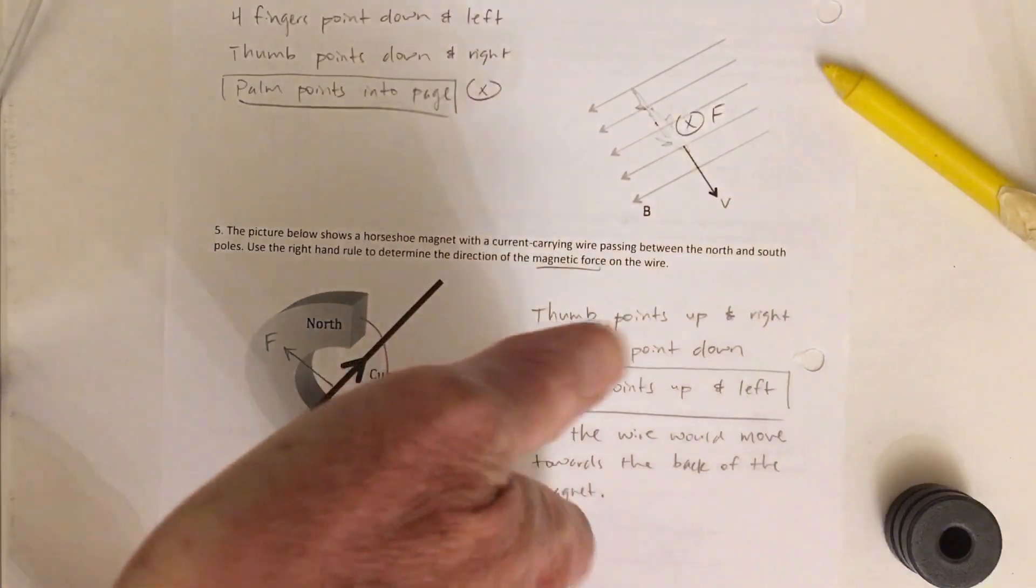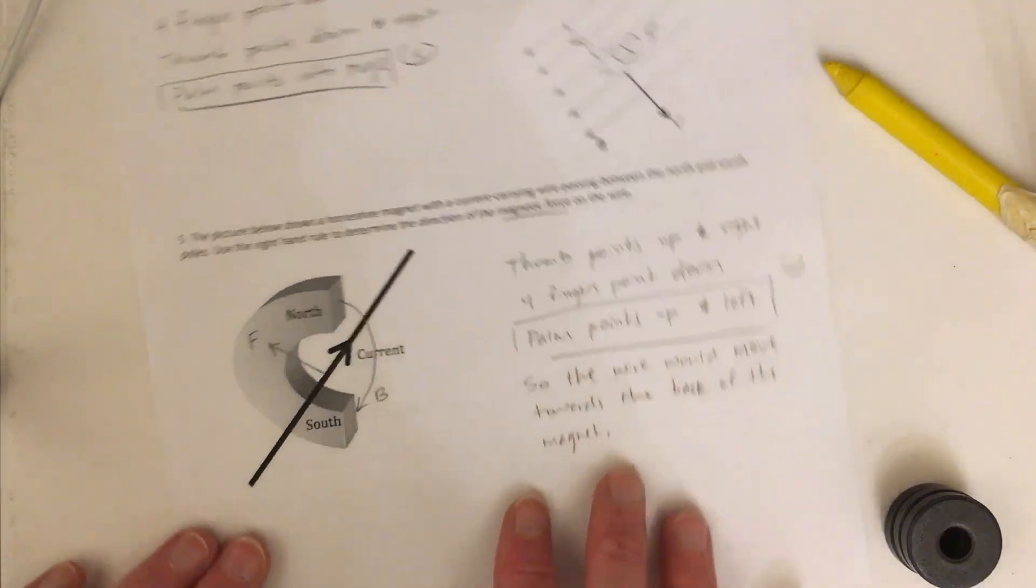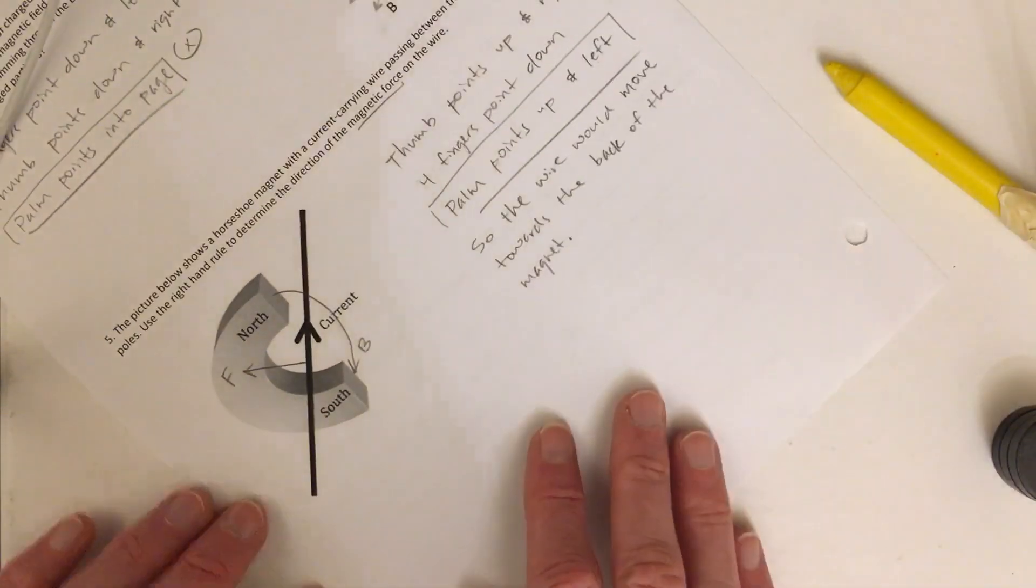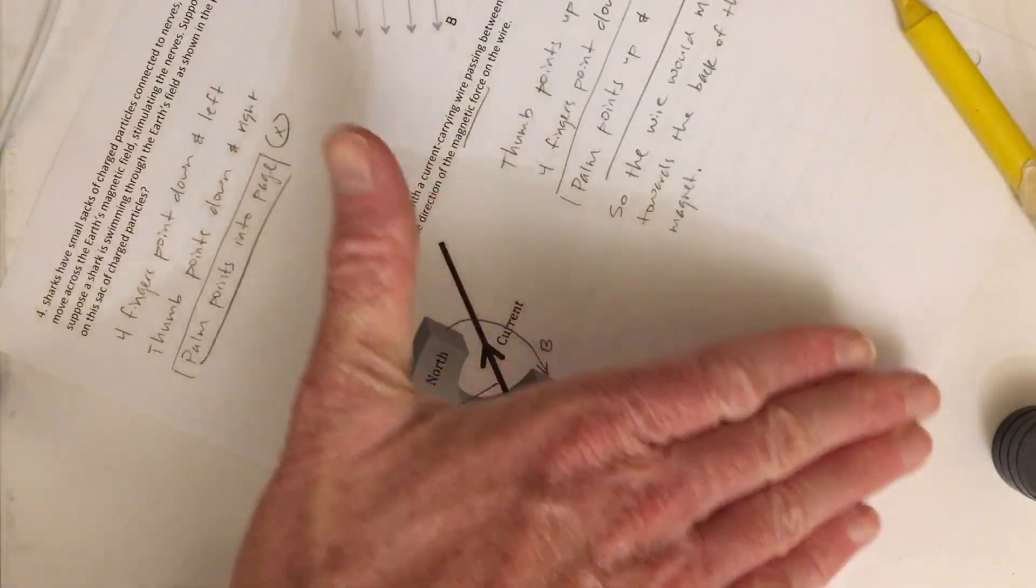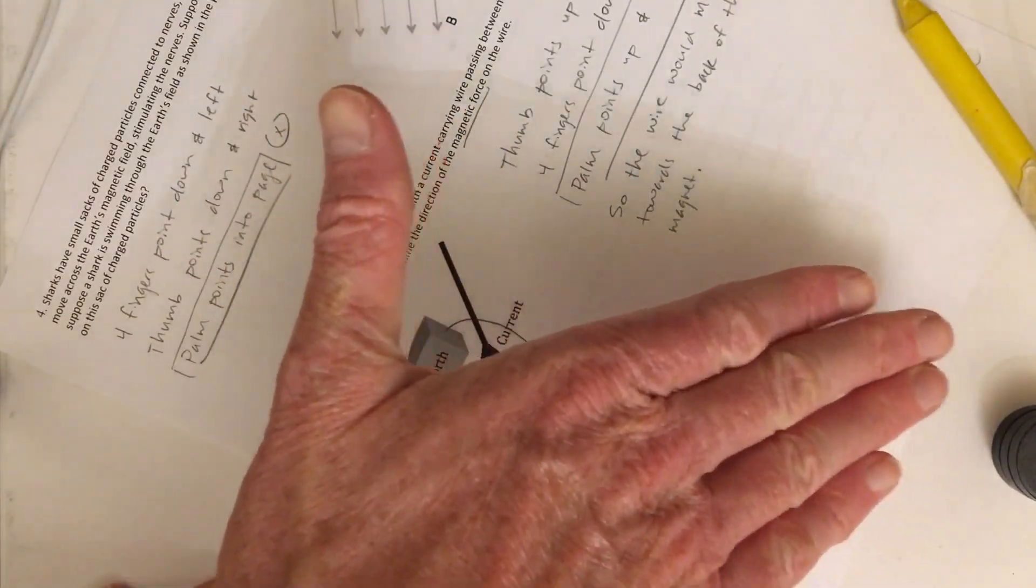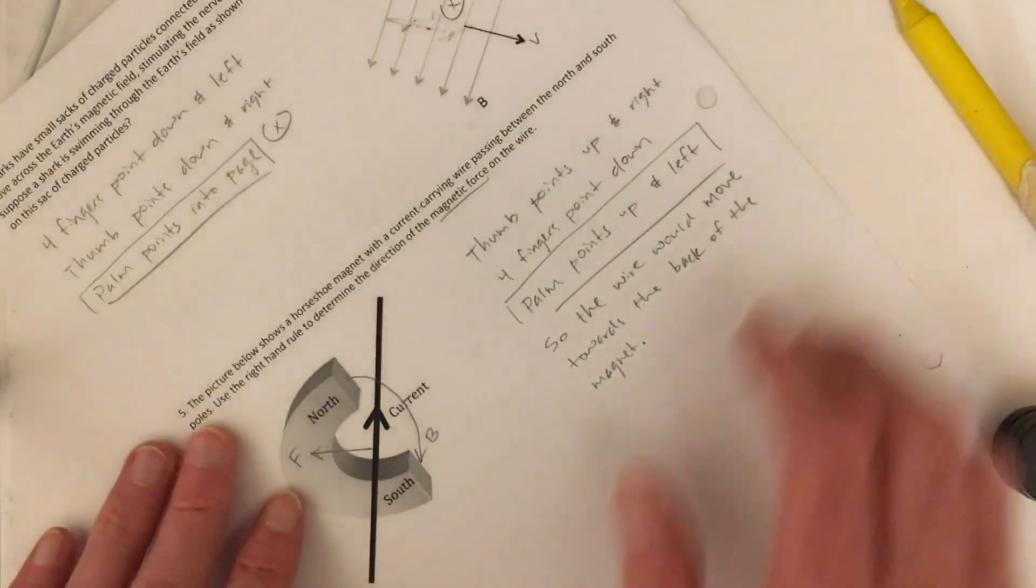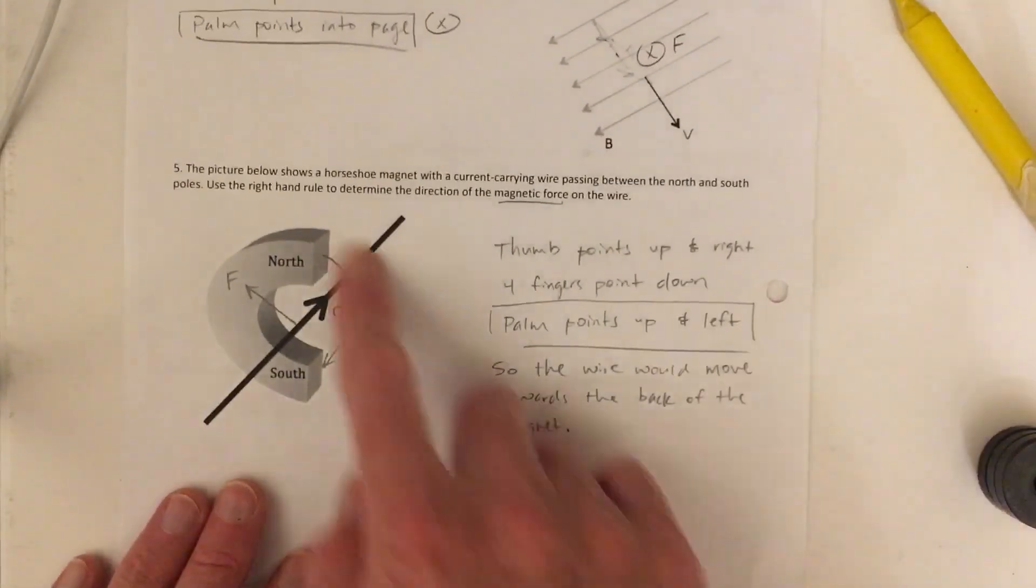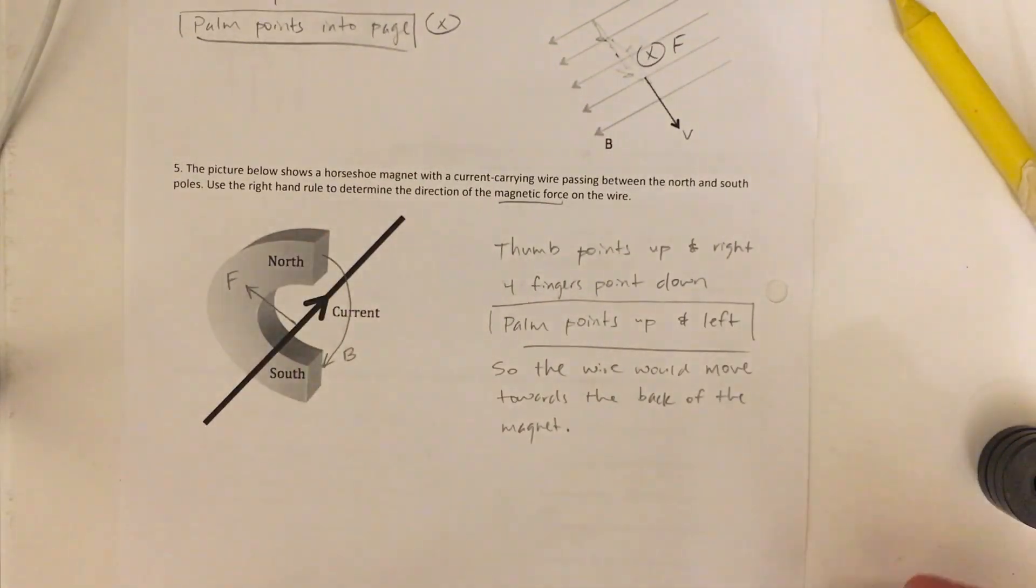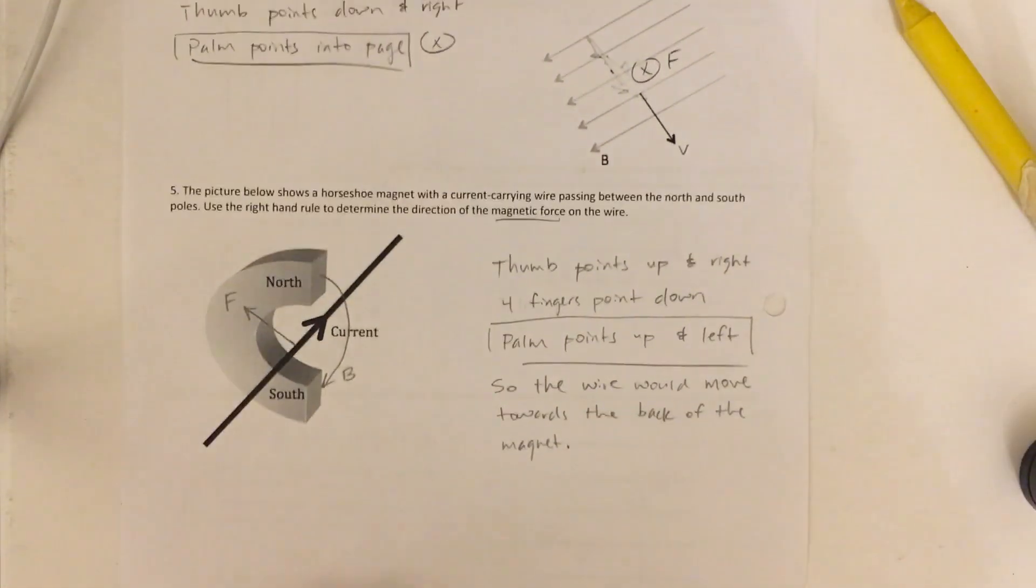So these fingers are down, and I'm going to turn the page. These fingers are down while my thumb is this way. And so my slap is into the back of the magnet. This is the trickiest one. I probably will not give you a 3D drawing like that on a quiz because it's just the hardest to visualize. Hope this helps.